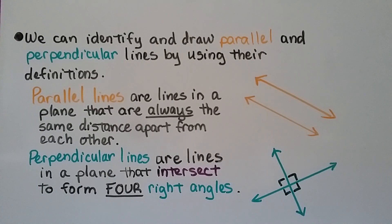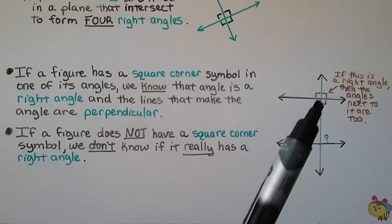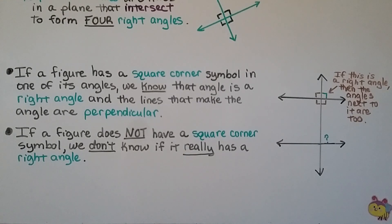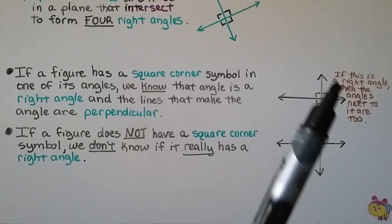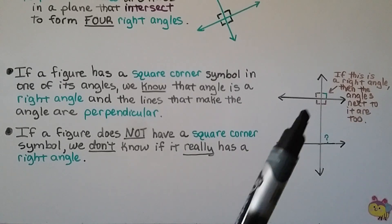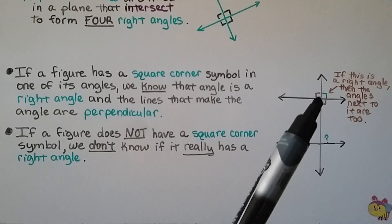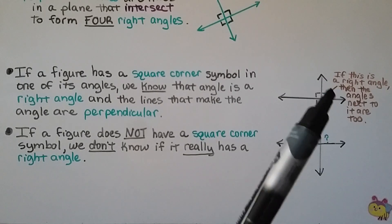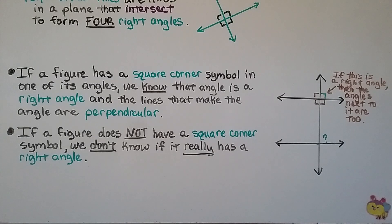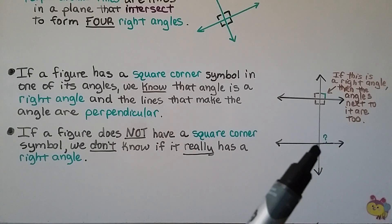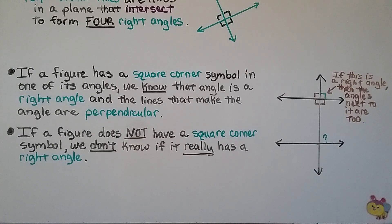We can identify and draw parallel and perpendicular lines using their definitions. Parallel lines are lines in a plane that are always the same distance apart. Perpendicular lines are lines in a plane that intersect to form four right angles. If a figure has a square corner symbol in one of its angles, we know that angle is a right angle and the lines are perpendicular. If one corner is a right angle, all adjacent angles are also right angles. Without a square corner symbol, we can't be sure — we'd need to measure or use a square corner of paper.